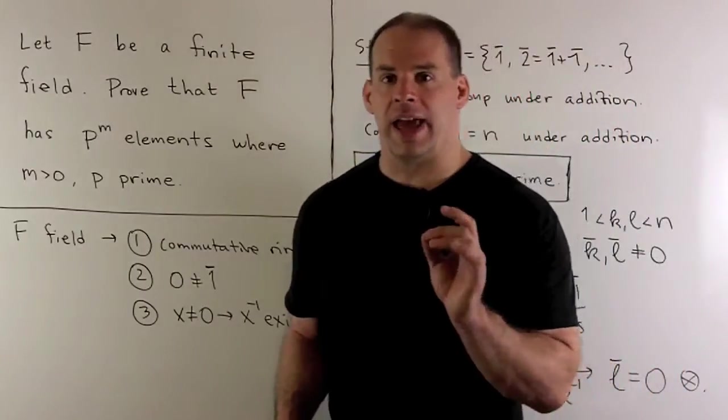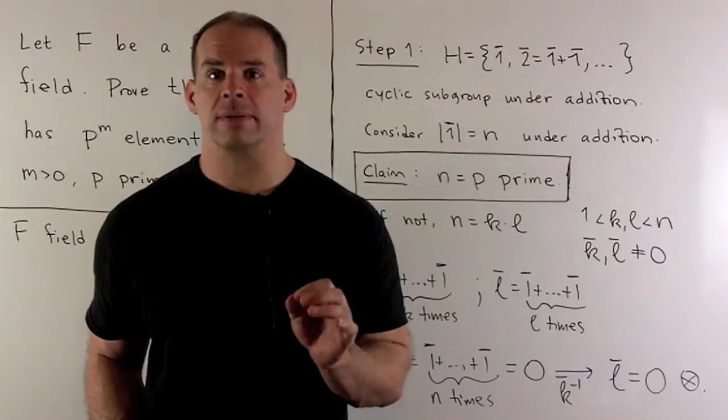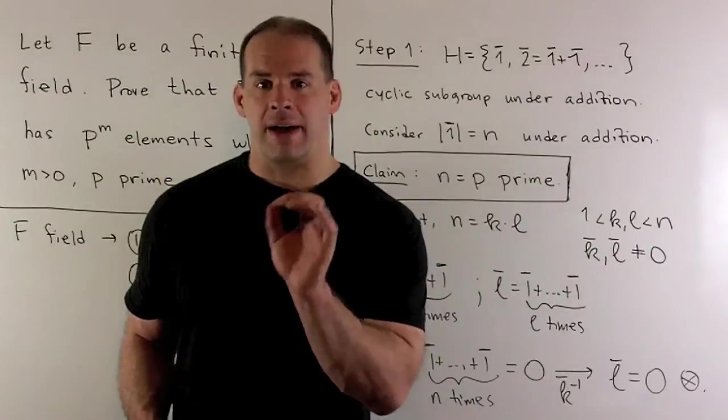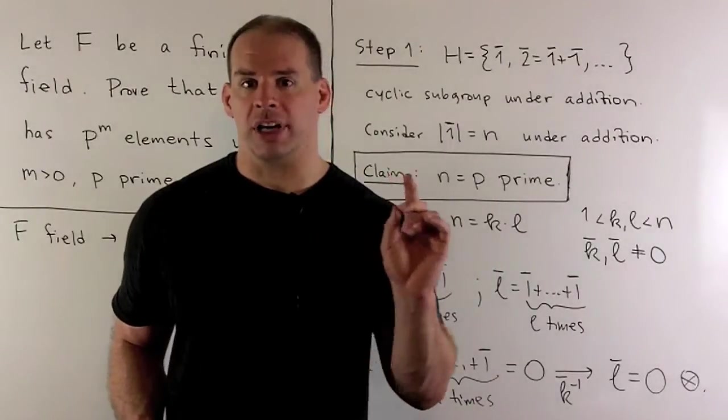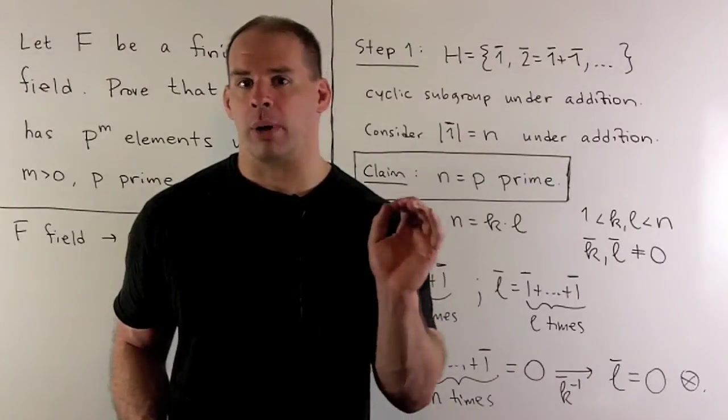Now, to get a handle on the number of elements in F, we want to get a handle on the characteristic of F. To start, we note F is going to be an abelian group under addition. So, I want to consider the cyclic subgroup generated by one bar.